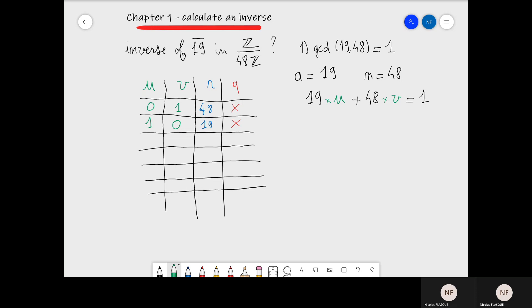Now we can start the calculation. Note that we are only looking for the value of the U coefficient. The value of the V coefficient doesn't matter. If you want to be as efficient as possible, you can omit filling the V column. In this example, I will fill it anyway to be sure everything is okay, but the final value of V is not useful for the inverse.